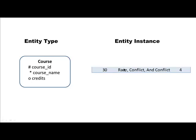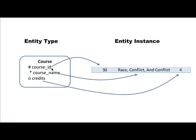An instance of an entity is a particular course — for example, course number 30 from our course table, whose name is 'Race Conflict and Conflict Resolution,' which is four credits. That represents a particular course, which is an entity instance, whereas the entity type represents the general concept or category. It says there is something called 'course' in our application and every course has these three attributes. Every particular course then has its own values for those attributes. In database design, we are much more concerned about entity types than instances, because instances keep being created and destroyed as the application is used. The concept of a course, however, continues to stay on.